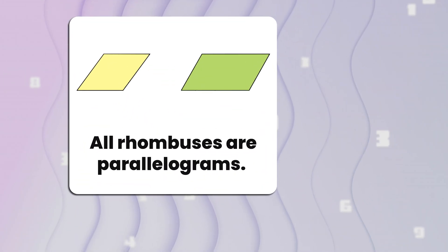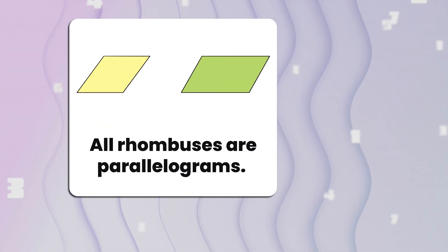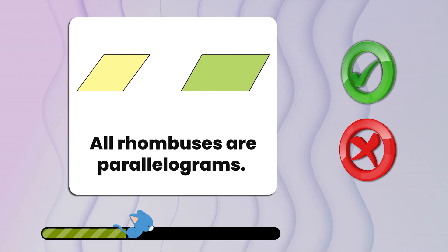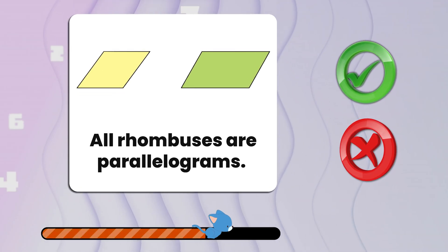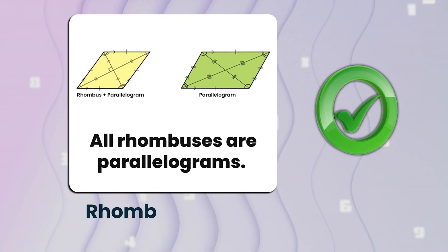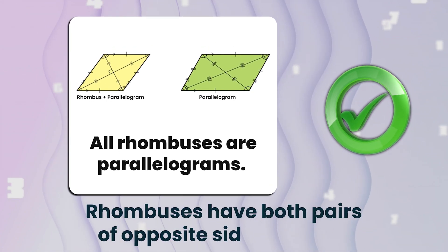Number twelve. All rhombuses are parallelograms. True or false? That's true. Rhombuses have both pairs of opposite sides parallel.